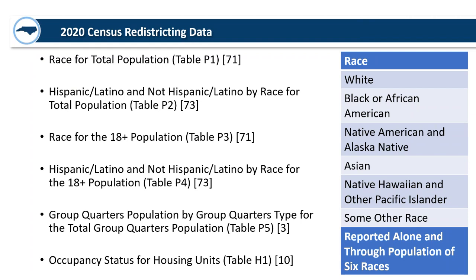Table P2 is the Hispanic and non-Hispanic population by race for the total population, using those same race categories flagged as either Hispanic or non-Hispanic. Tables P3 and P4 are exactly the same as the first two tables, but only looking at the 18-and-over population. The age breakdown available is only total population and 18 and over — if you want preschool-age children 0 to 5, that is not in tomorrow's release. You'll have to wait for what they're calling the demographic and housing characteristics file from the 2020 census, probably coming sometime next year.